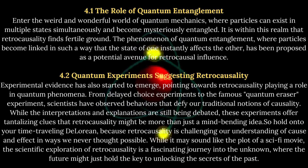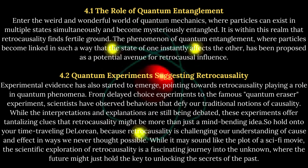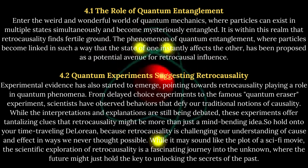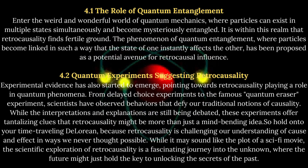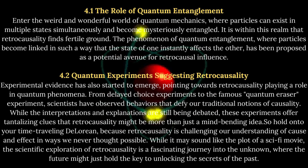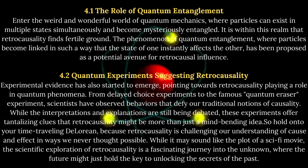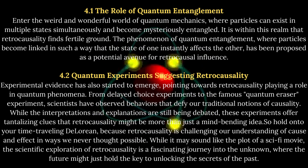Enter the weird and wonderful world of quantum mechanics, where particles can exist in multiple states simultaneously and become mysteriously entangled. It is within this realm that retrocausality finds fertile ground. The phenomenon of quantum entanglement — where particles become linked in such a way that the state of one instantly affects the other — has been proposed as a potential avenue for retrocausal influence.